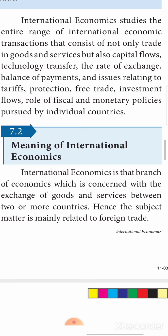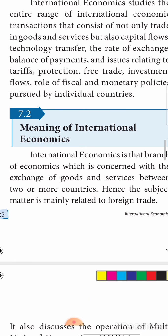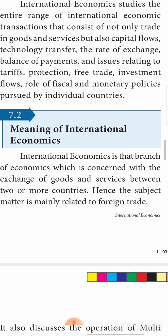Now let us understand the meaning of international economics. It is a branch of economics concerned with the exchange of goods and services between two or more countries, where the trade relationship is not within the country but between two or more countries. Goods and services are being traded, so the subject matter is mainly related to foreign trade. This is the meaning — international economics is a branch of economics concerned with the exchange of goods and services between two or more countries. You can otherwise call it foreign trade.